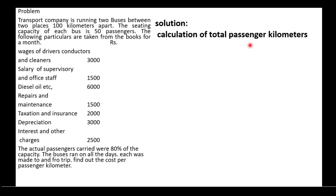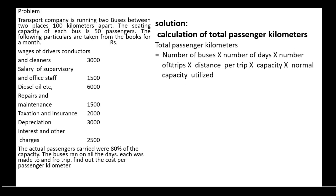In the solution, first we calculate the total passenger kilometers. The total passenger kilometers are calculated using the formula: Number of buses × Number of days × Number of trips × Distance per trip × Capacity × Normal capacity utilized.